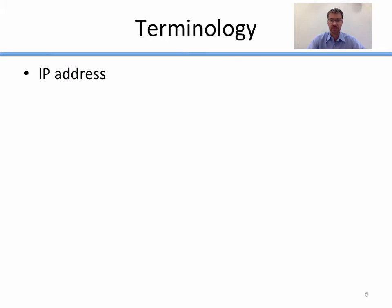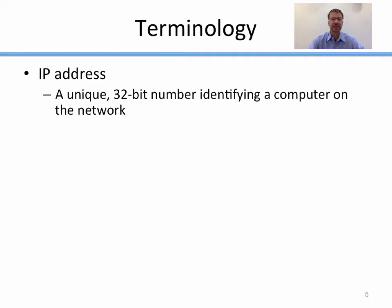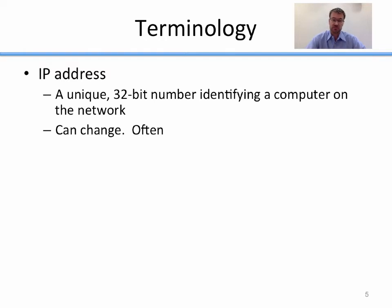Another piece of terminology is IP address. An IP address is a unique 32-bit number identifying your computer on a network — specifically, if you're connected to the internet, identifying your computer on the internet. IP addresses can change often. Every time you connect to a different access point at QU, your IP address could change, and sometimes it'll change while you're connected. So the MAC address is used for local routing and never changes, but your IP address, which is used for global routing, can change at a whim.